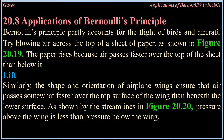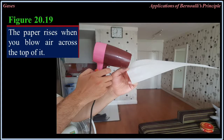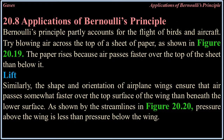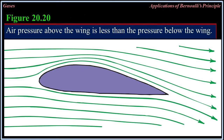20.8 Applications of Bernoulli's Principle. Bernoulli's principle partly accounts for the flight of birds and aircraft. Try blowing air across the top of a sheet of paper as shown in figure 20.19 — the paper rises because air passes faster over the top of the sheet than below it. Similarly, the shape and orientation of airplane wings ensure that air passes somewhat faster over the top surface of the wing than beneath the lower surface, as shown by the streamlines in figure 20.20.